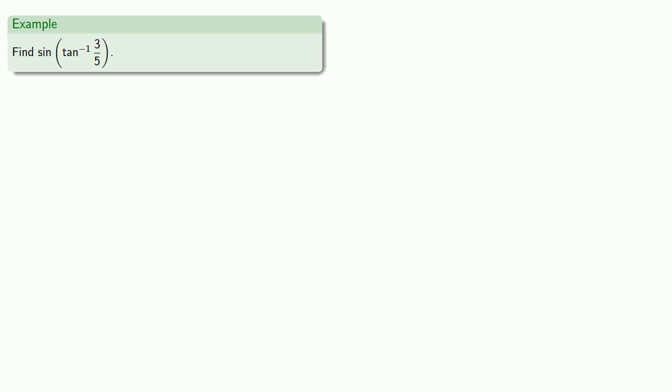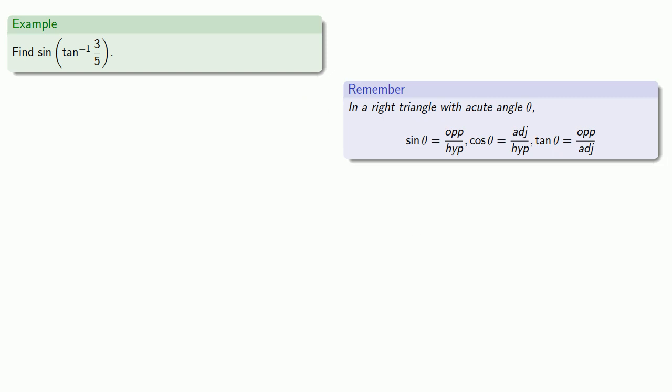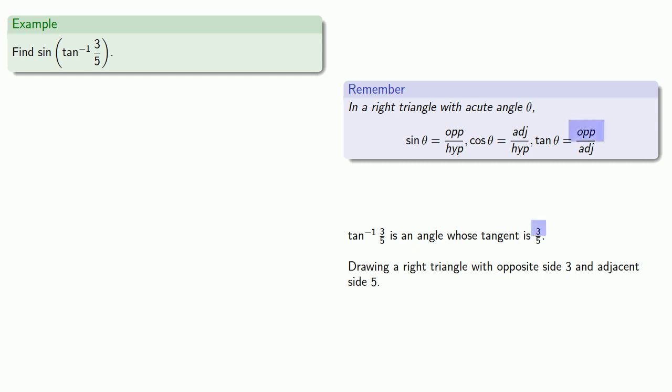For example, let's say we want to find the sine of the inverse tangent of 3 fifths. In a right triangle with acute angle theta, sine is opposite over hypotenuse, cosine is adjacent over hypotenuse, and tangent is opposite over adjacent. This means inverse tangent of 3 fifths is an angle whose tangent is 3 fifths, so let's draw a right triangle with opposite side 3 and adjacent side 5.